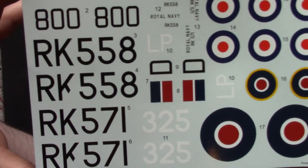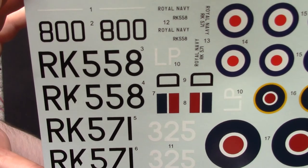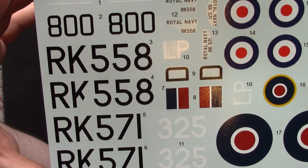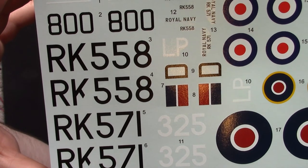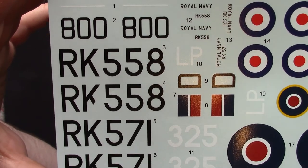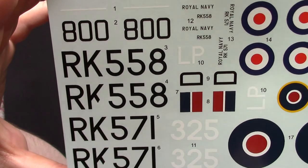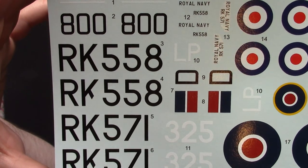Decal sheet, very thin decals, they all look to be in register at a quick glance. Not a huge amount of carrier film, if any, around them. Obviously there's plenty around the numbers, but that's just the way it is. Yep, I'm plenty happy enough with those decals as long as they go down well.